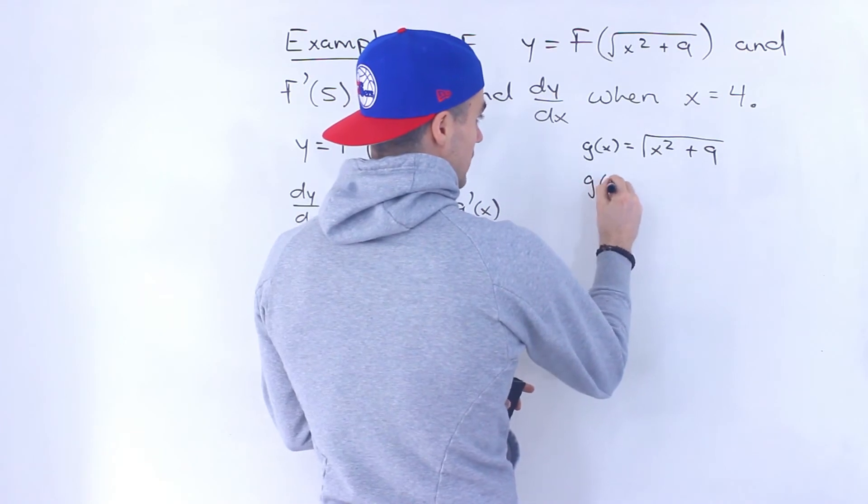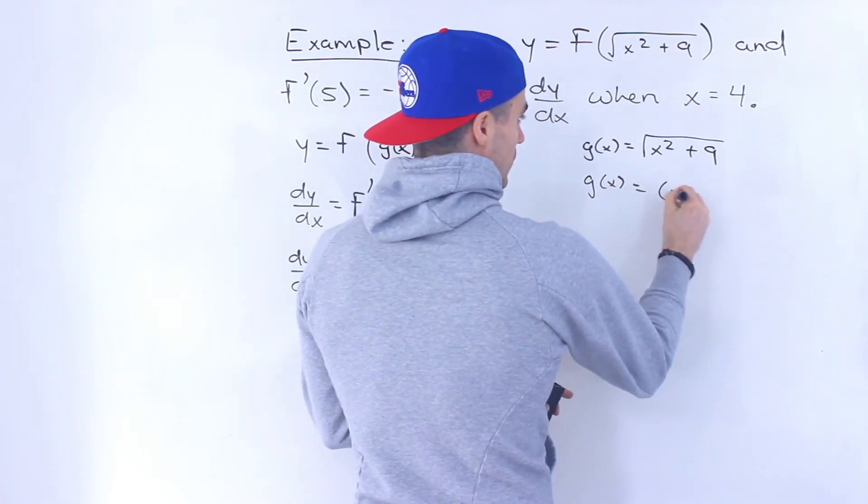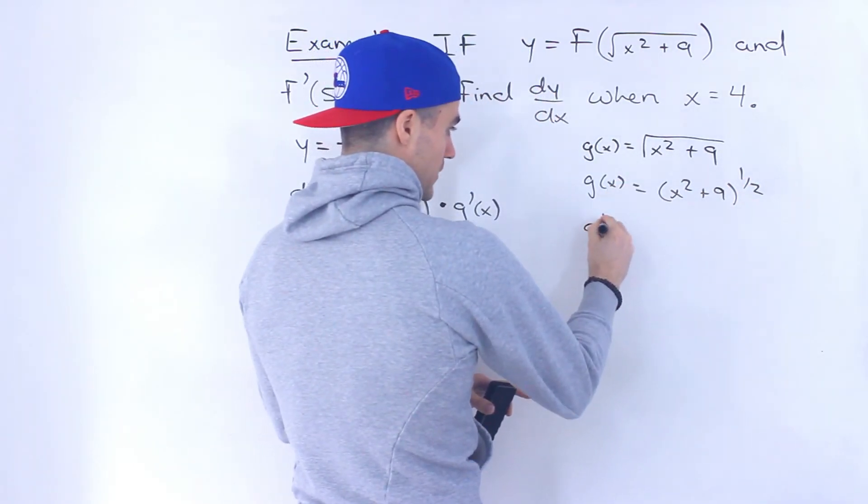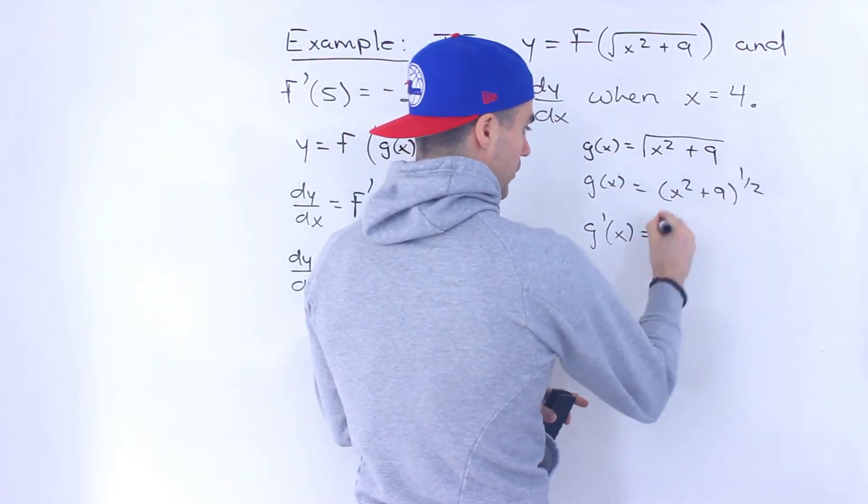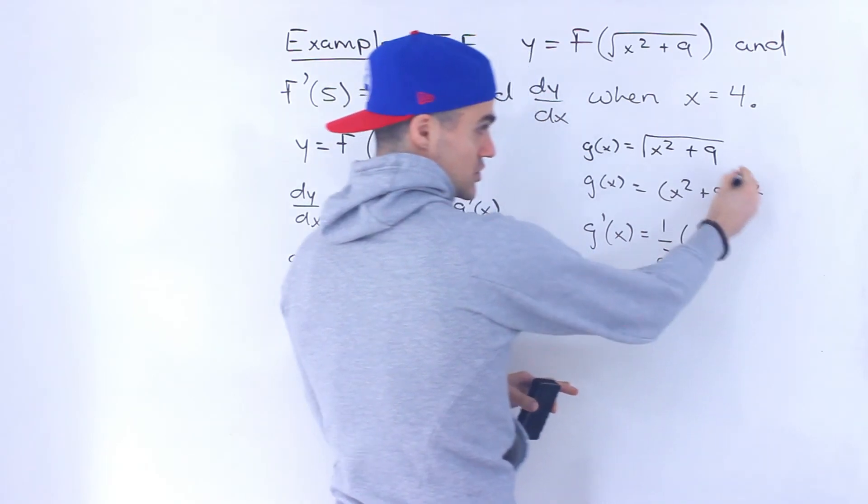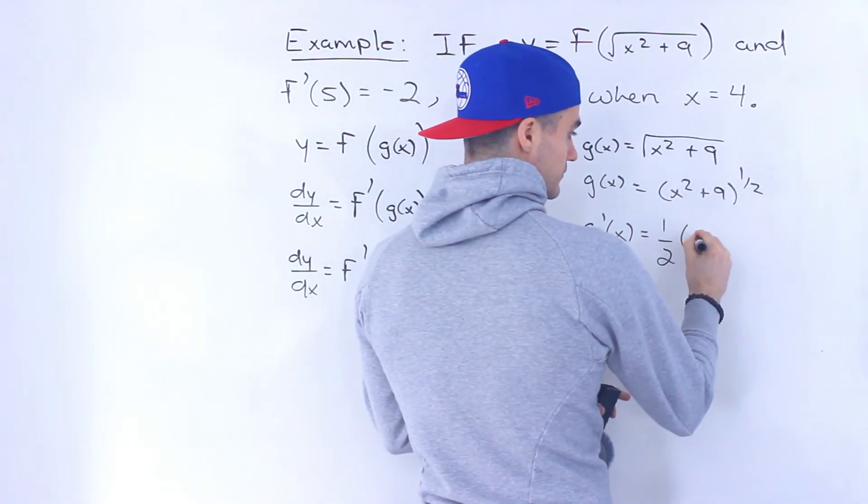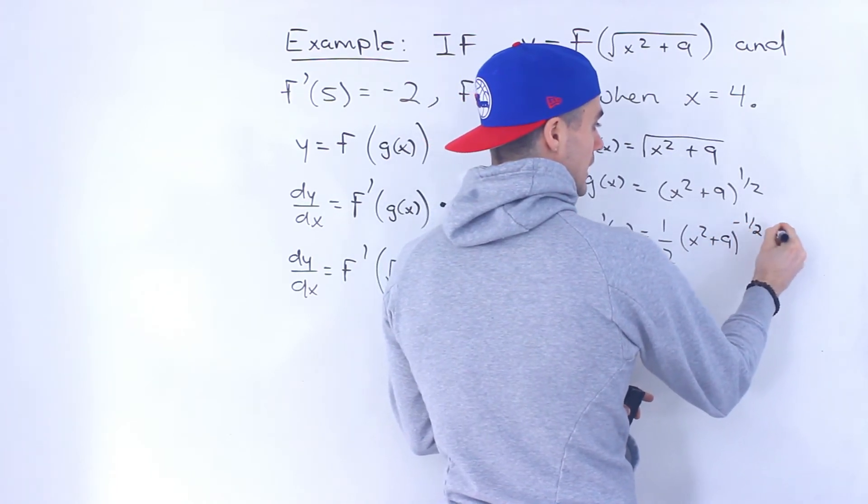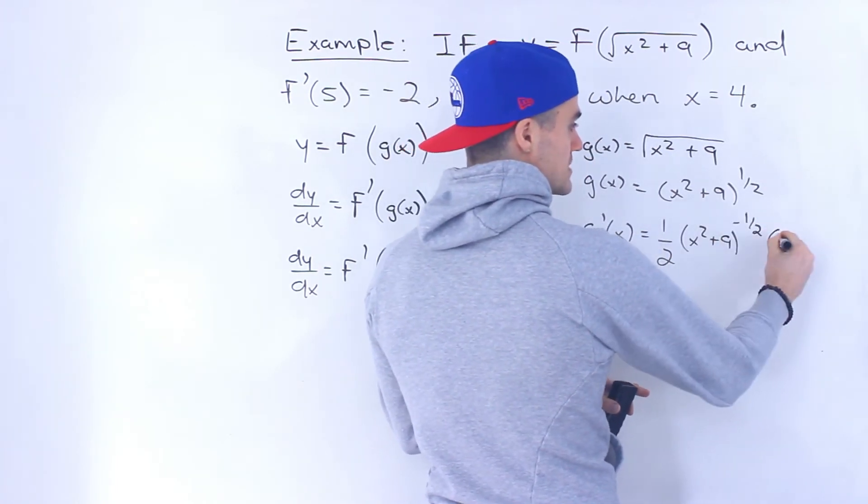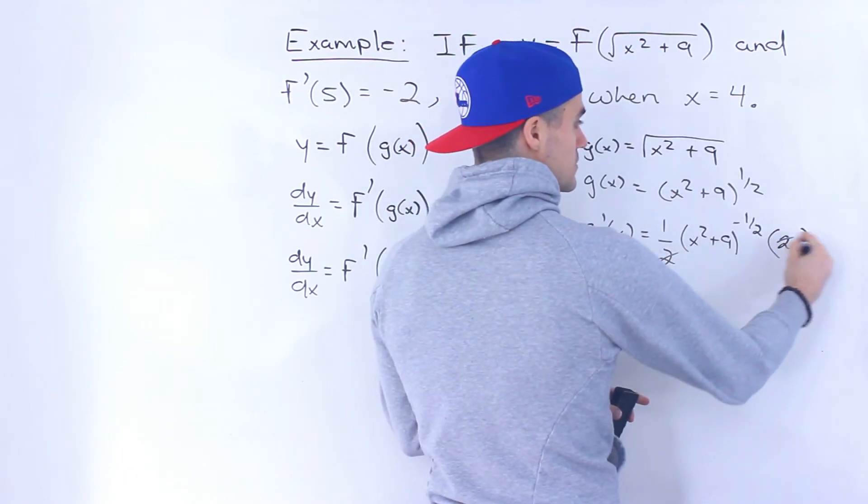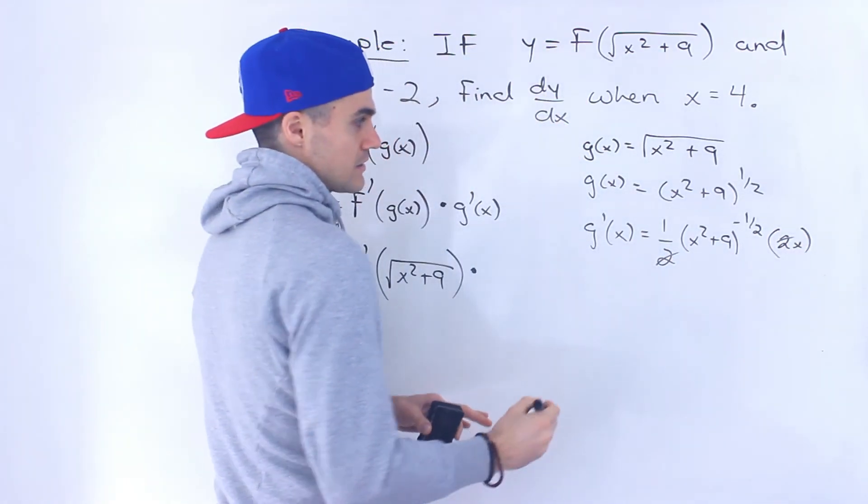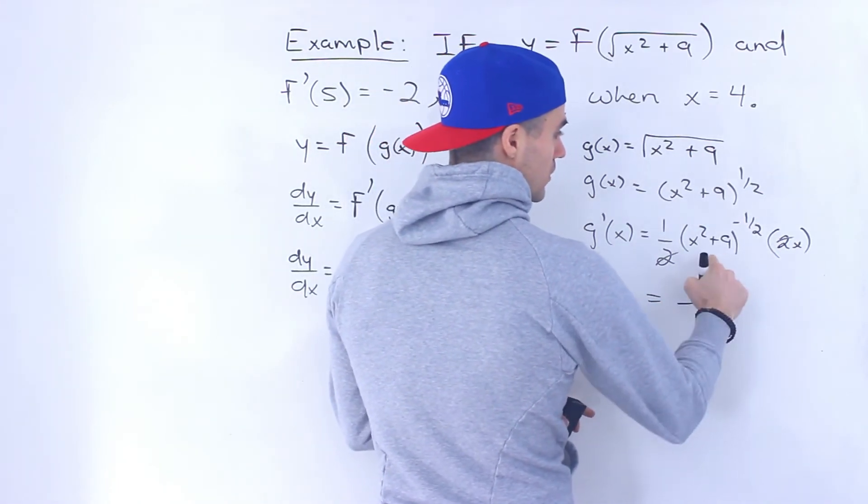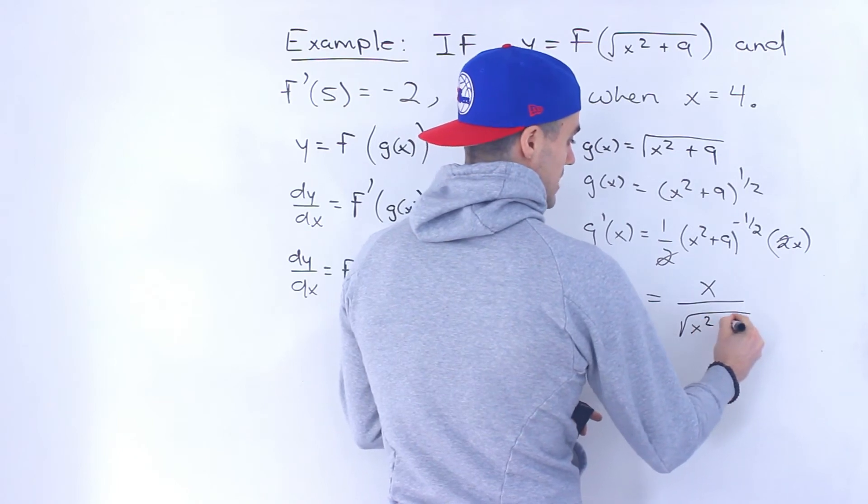Now this function here, if we rewrite, is x squared plus 9 to the power of a half. So when we take the derivative, bring the one half down, we're gonna have to use the chain rule, we're gonna have to apply the chain rule on this here. So bring the one half down, subtract 1 from the exponent, and then multiply it by the derivative of the inside, which would be 2x. So notice this 2 and that 2 cancel out.